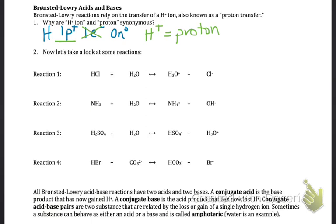Let's look at some reactions. With Brønsted-Lowry, we think about substances capable of donating and accepting hydrogen ions. Water is a little unusual — it's capable of both donating and accepting hydrogen ions, and we call something that can behave as either an acid or a base amphoteric. In reaction one, we have HCl + H₂O → H₃O⁺ + Cl⁻. We draw arrows showing where the hydrogen ions come from and go to.